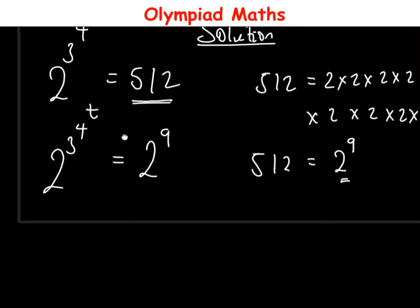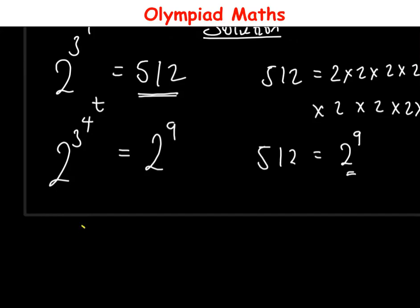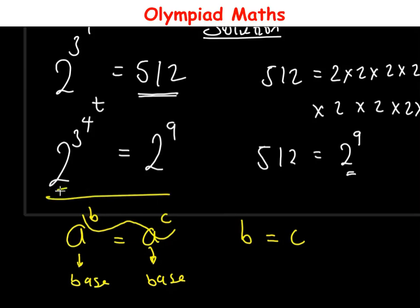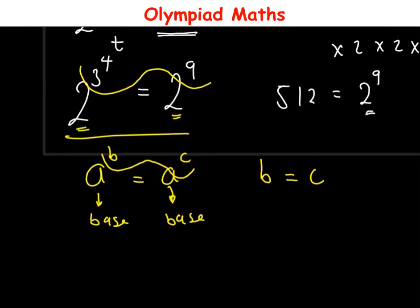Applying the rule of indices: if you have a raised to power b equals a raised to power c, since we have the same base, we can simply compare the exponents such that b is equal to c. Applying the same rule here — we have the same base, 2 — we can compare the exponents, so this becomes 3 raised to power 4 raised to power t is equal to 9.